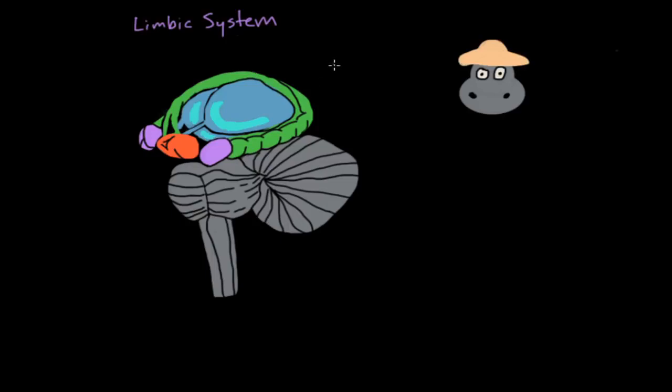Now before I get going into the nitty gritty, I want to give you a quick overview of what structures we're going to talk about. And the way I remember these structures is through this little cartoon here. This is a hippopotamus and he's wearing a hat. Now why is this hippopotamus wearing this stylish hat? Well, this is my way of remembering the four most important components of the limbic system when it comes to emotion.